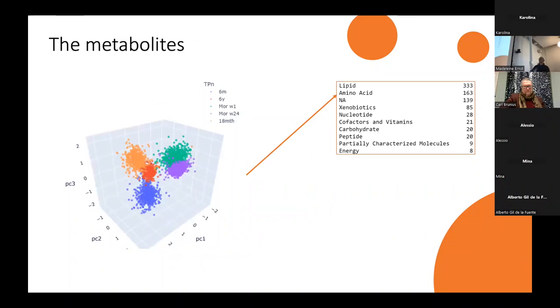This is kind of the grouping of the metabolites. Mostly it's lipids, then we have a lot of amino acids, some xenobiotics, nucleotides, and vitamins.